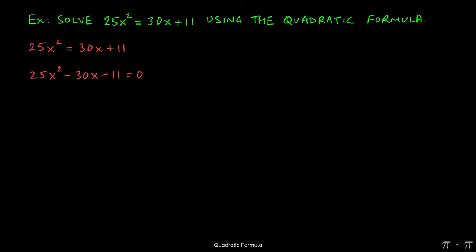Since all the terms are on one side with zero on the other side, we can start identifying our coefficients. a is 25, b is negative 30, and the constant c is negative 11.